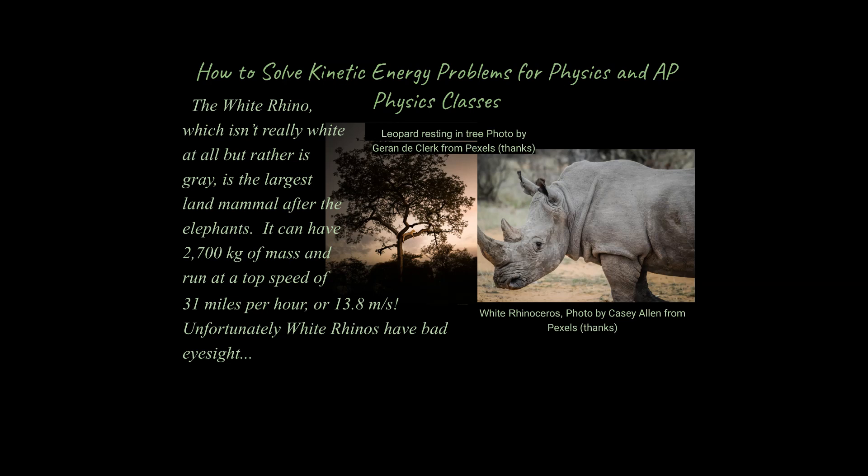So let's talk about the white rhino quickly. I happen to love biology and I like to draw connections between physics and biology or chemistry whenever possible. The white rhino is called white, but it's more gray than anything else. It's one of the largest land mammals after the elephants — it can be huge, 2,700 kilograms of mass, and it can be very fast for short bursts of time.